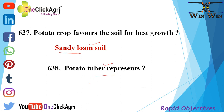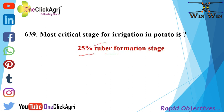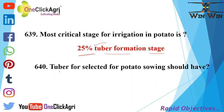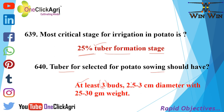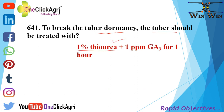Potato tuber represents an enlarged underground stem. The most critical stage for irrigation in potato is the 25% tuber formation stage. Tubers selected for potato sowing should have at least 3 buds, 2.5 to 3 cm diameter, with 25 to 30 gram weight.